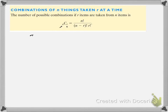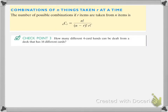Let's do an example. How many different four-card hands can be dealt from a deck that has 16 different cards? Order doesn't matter here — they don't give us any ranking or order. They just ask how many four-card hands in general, so this is 16C4. We can put this into our calculator under the math menu.